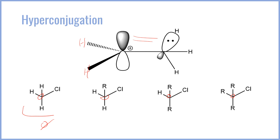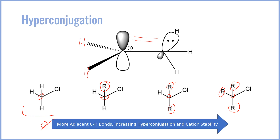In the case of the primary cation, the adjacent carbon will have some C-H bonds that can participate in hyperconjugation. In the secondary species, both adjacent carbons contribute, and in the tertiary, all three adjacent carbons can participate in hyperconjugative interactions. So more adjacent C-H bonds leads to increasing hyperconjugation — there are more possibilities for where the hyperconjugation can come from — and as a result the cation is more stable in the tertiary species than in the secondary, than in the primary, and than in the methyl cation.